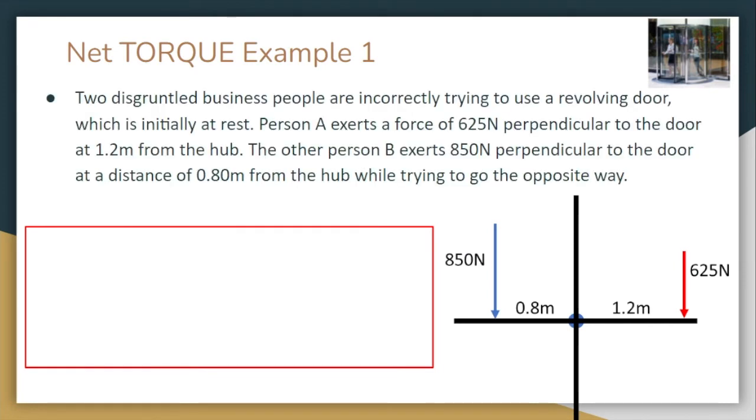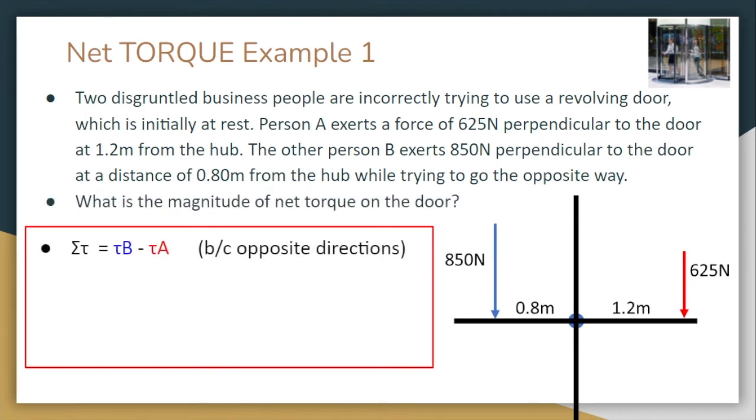Let's take a look at this first example. Two disgruntled business people are incorrectly trying to use a revolving door, which is initially at rest. Person A exerts a force of 625 newtons perpendicular to the door at 1.2 meters from the hub. The other person, person B, exerts 850 newtons at 0.8 meters. We have our diagram down below on the right hand side, where we can see person A exerting that 625 newtons at 1.2 meters and person B exerting 850 newtons at 0.8 meters. We want to figure out what is the magnitude of the net torque on the door.